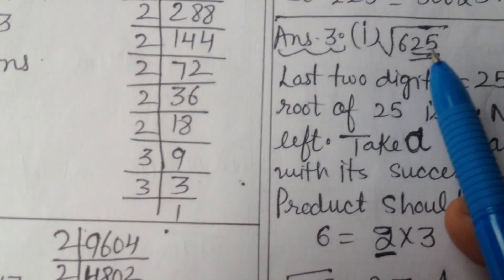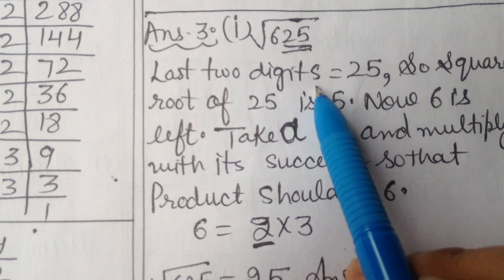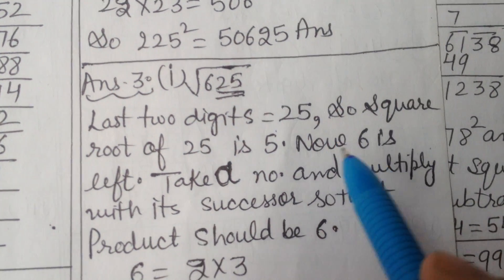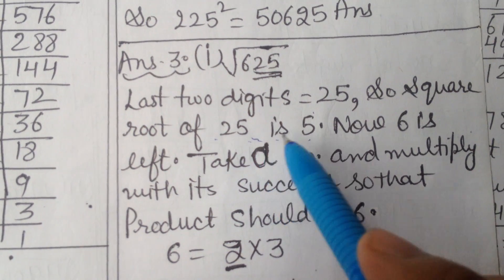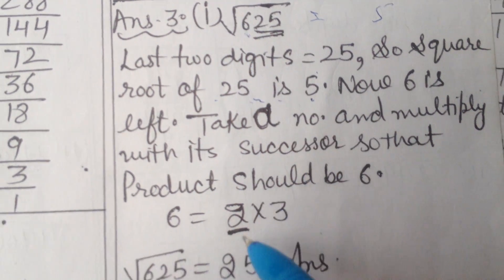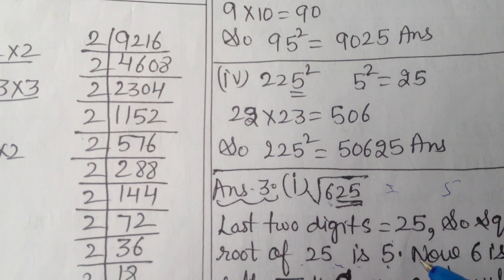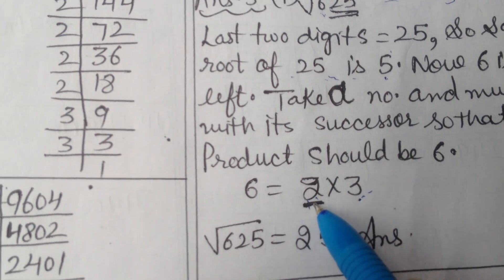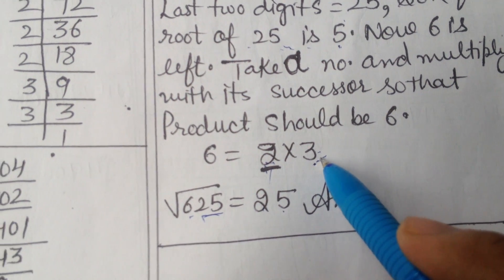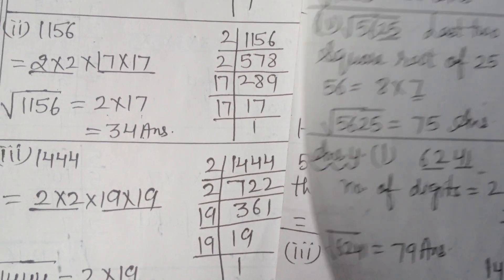Now you have to find square root. 625 is the square of which number? Put square root sign. Last two digits is 25, so square root of 25 is 5. Remaining digits, 6 can be written as 2 times 3, which is the number multiplied with its successor. So smallest number is 2. So square root of 625 is 25.